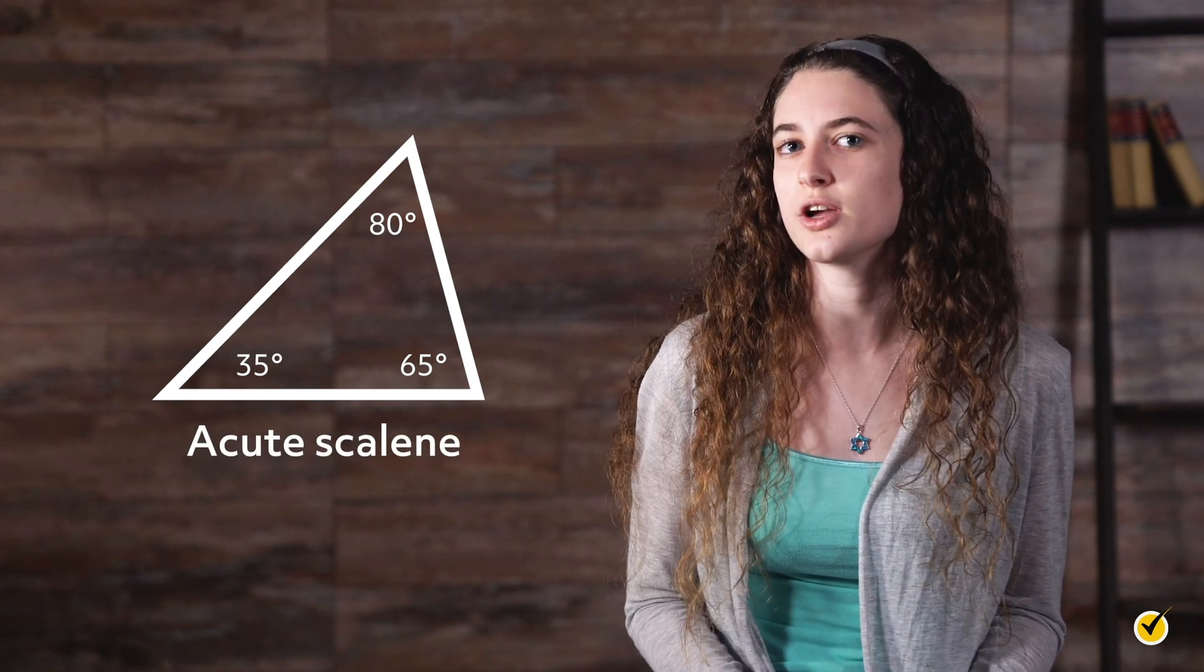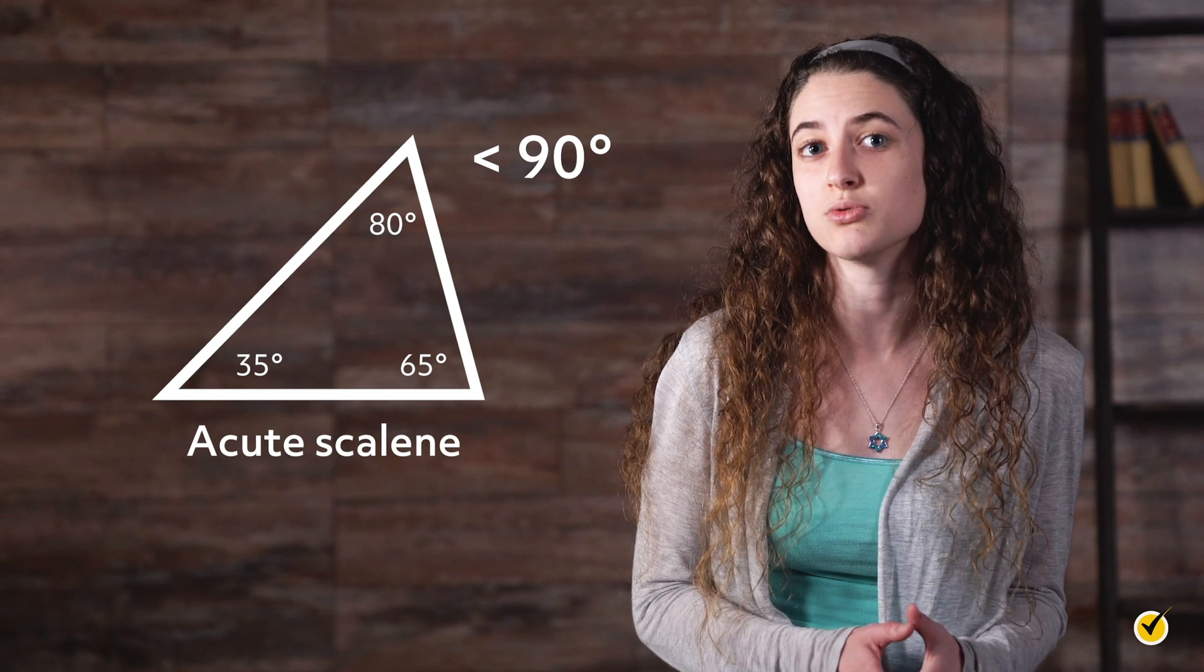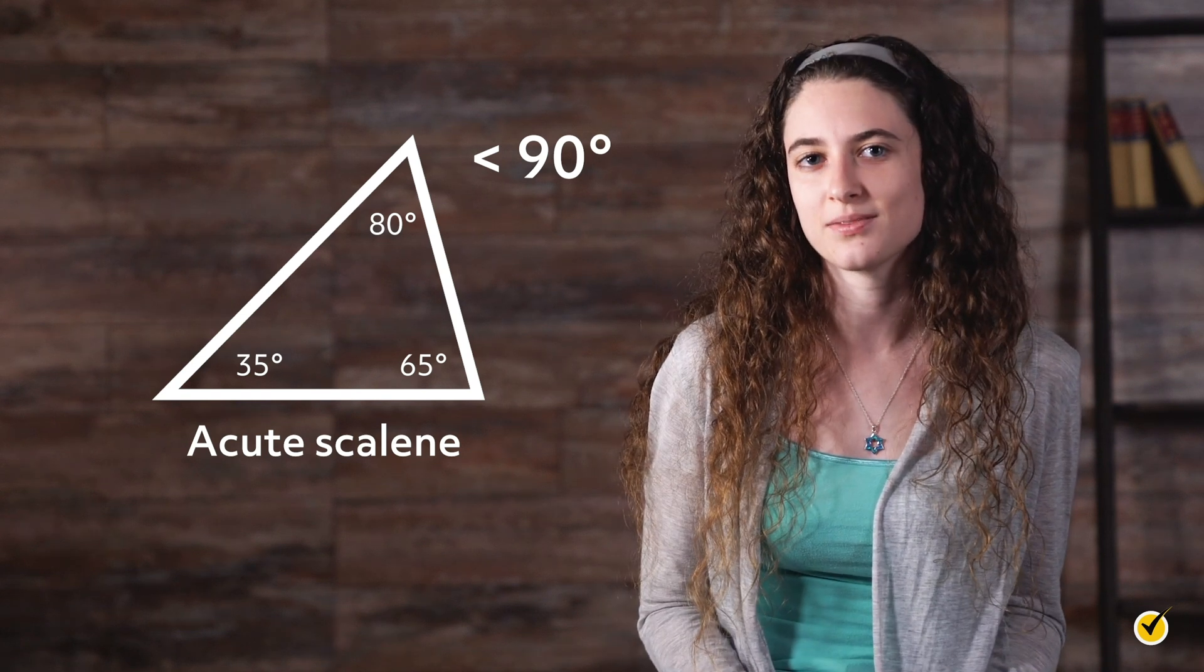For instance, this triangle is an acute scalene triangle. Its largest angle is less than 90 degrees, so it's acute. And none of its angles are the same, so it's scalene.